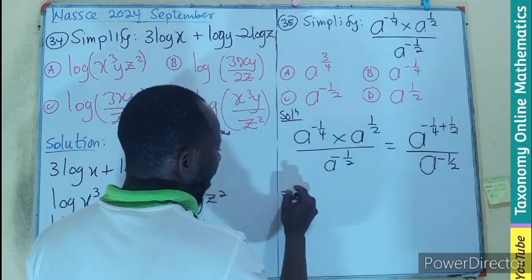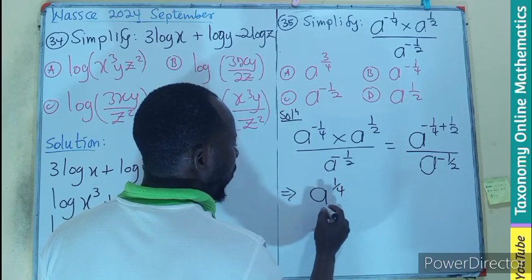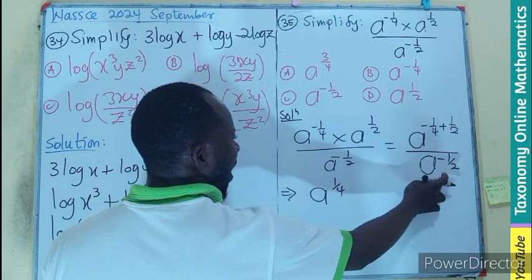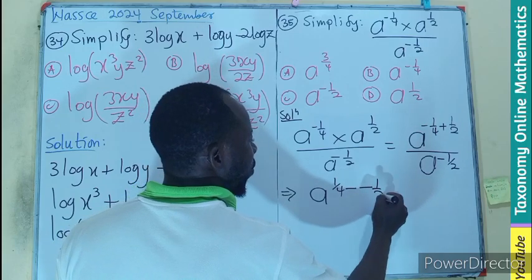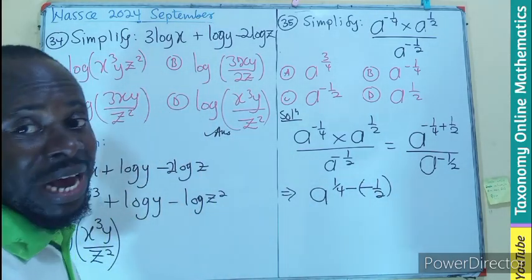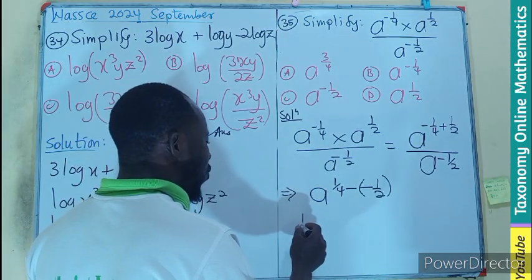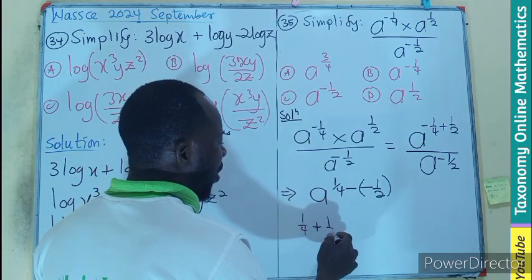So this implies that A exponent 1 on 4, this is division, so minus negative 1 on 2. So this is going to be addition. So I'll be dealing with 1 on 4 plus 1 on 2.